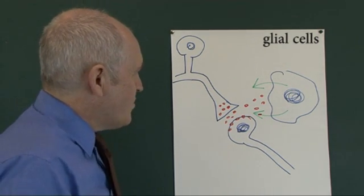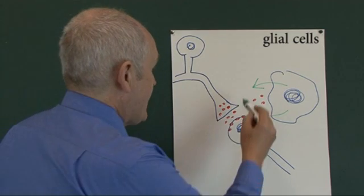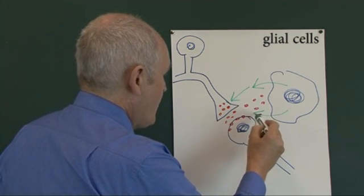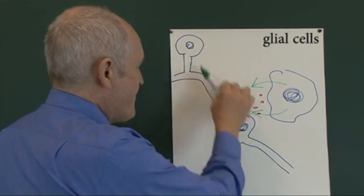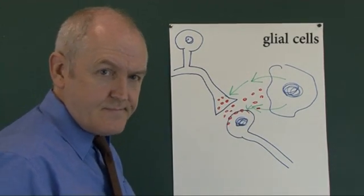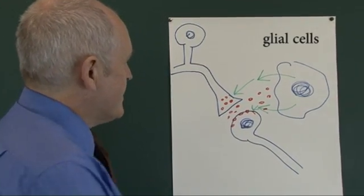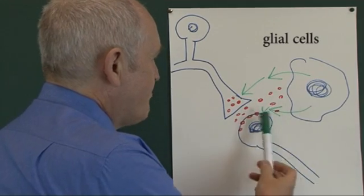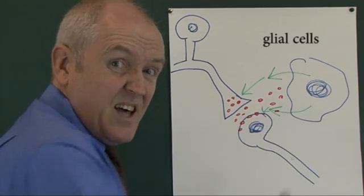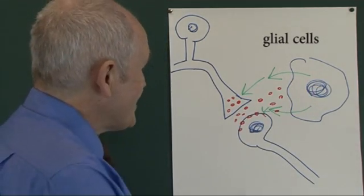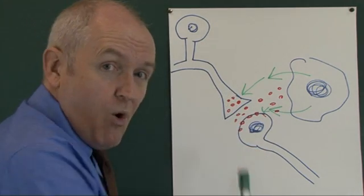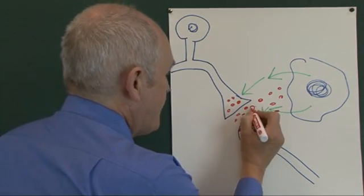These chemicals produced by the activated glial cell will actually stimulate more neurotransmitter to be released from here.